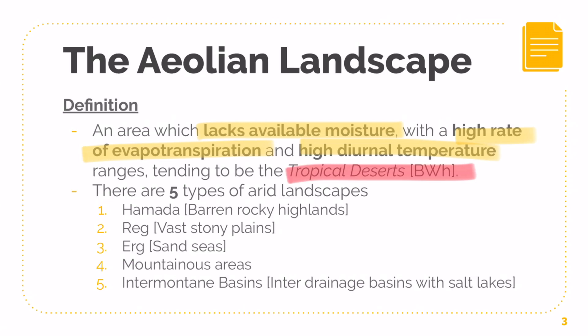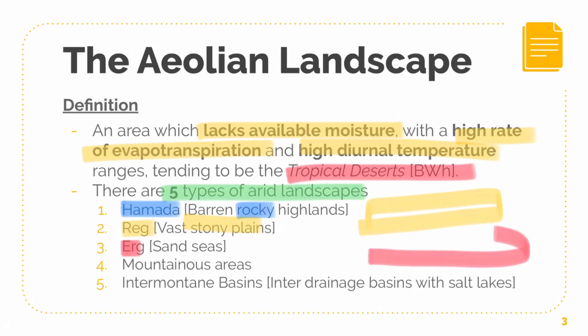There are 5 main types of Aeolian Landscapes — this is just for your info, and it has a possibility of coming out for your case studies. First, you have the Hamada, which is basically your barren rocky highlands — very rough and coarse. Then you have the Rack, which is basically your vast stony plain. Then your Aeol, which is your sand sea — a huge plot of land that's basically all sand. You also have mountainous areas, and lastly inter-montane basins, which are basically inter-drainage basins with salt lakes.